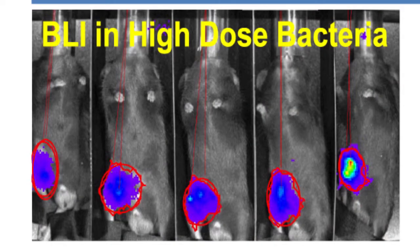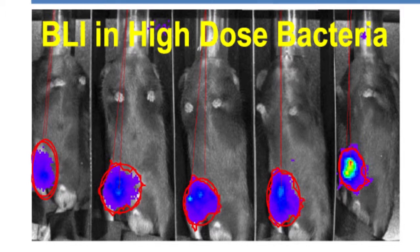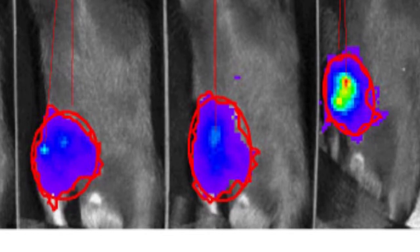What that shows is we're not getting systemic infection. The bacteria are localized, the mice are healthy, but they do have this big infection localized and that's what we're going to try to treat.